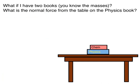So just by considering a book on a table, we've already discovered a new force — the normal force that arises from contact between two surfaces. Let's explore it a little bit more by considering a different example. What if you have two books, a chem book and a physics book? You know the masses of both of them. What is the normal force from the table on the physics book?